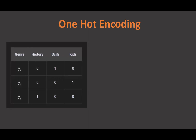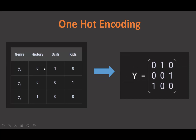Here's a basic example of one-hot encoding using movie genres Y1, Y2, and Y3. Y1 is a sci-fi movie — not history, not kids. Y2 is a kids movie — not history, not sci-fi. Y3 is a history movie — not sci-fi, not kids. To represent this as a matrix the computer understands, we use zeros and ones: Y1 gets [0, 1, 0], indicating sci-fi. This is how dummy encoding and one-hot encoding represent data in computers.